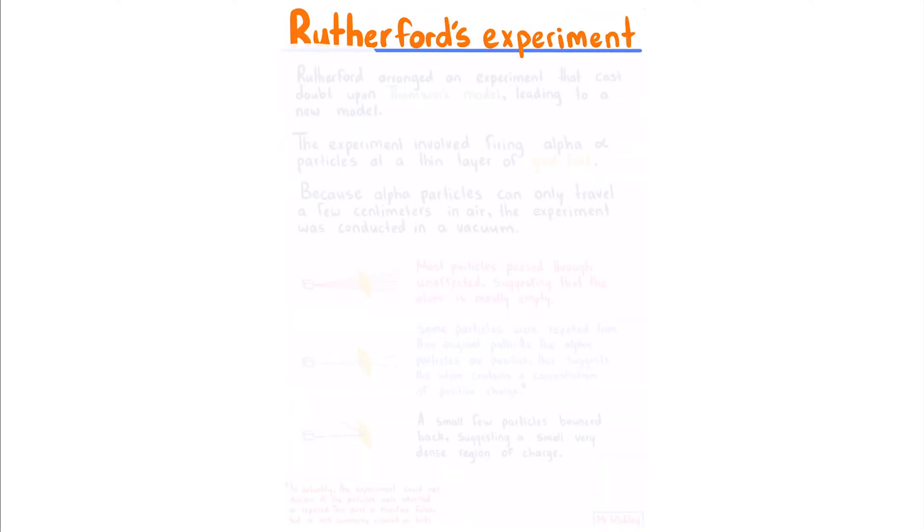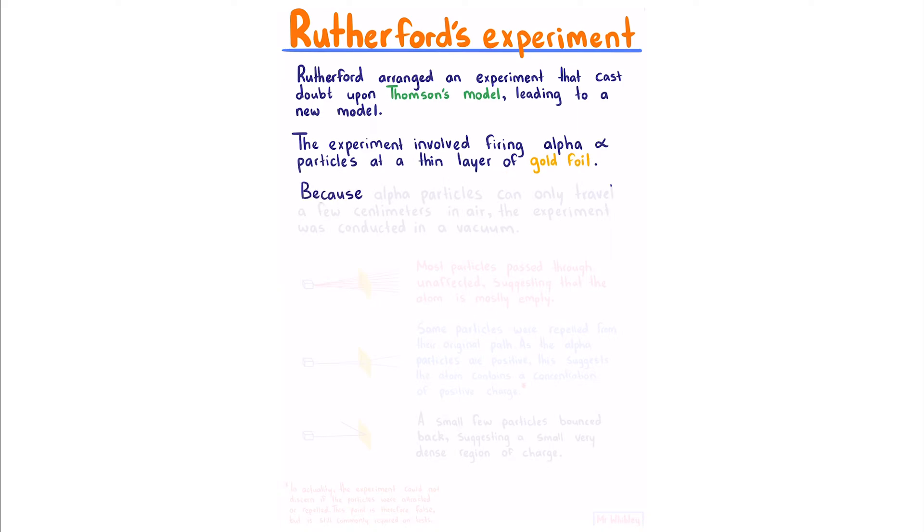Rutherford's experiment: Rutherford arranged an experiment that cast doubt upon Thomson's model, leading to a new model. The experiment involved firing alpha particles at a thin layer of gold foil. Because alpha particles can only travel a few centimeters in air, the experiment was conducted in a vacuum. Rutherford observed that most particles passed through unaffected.